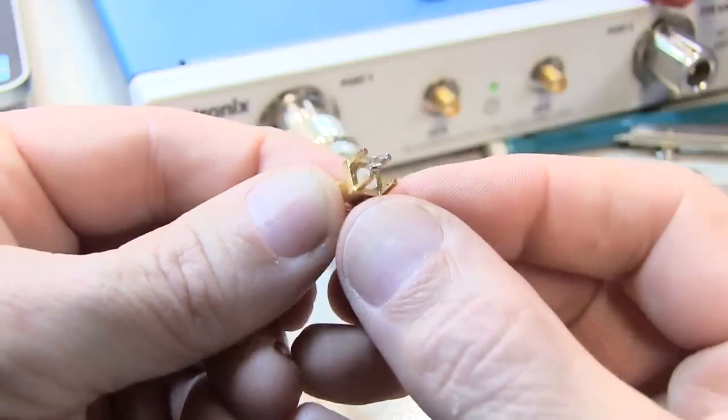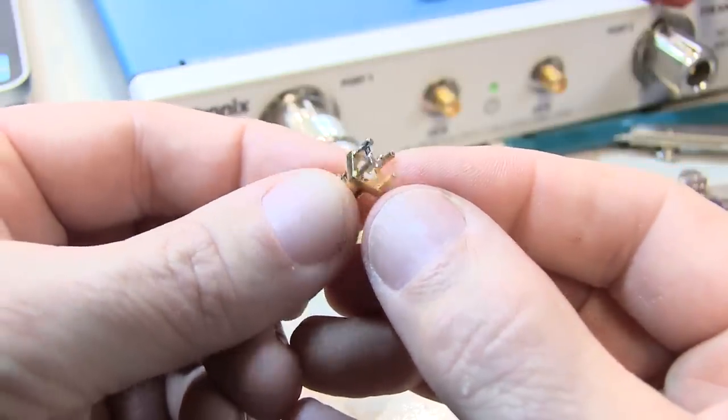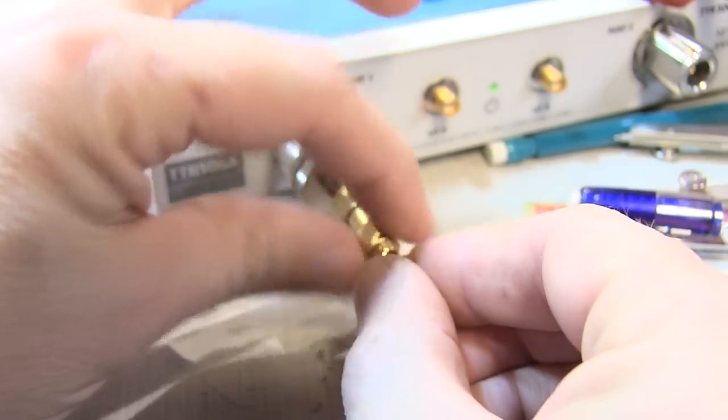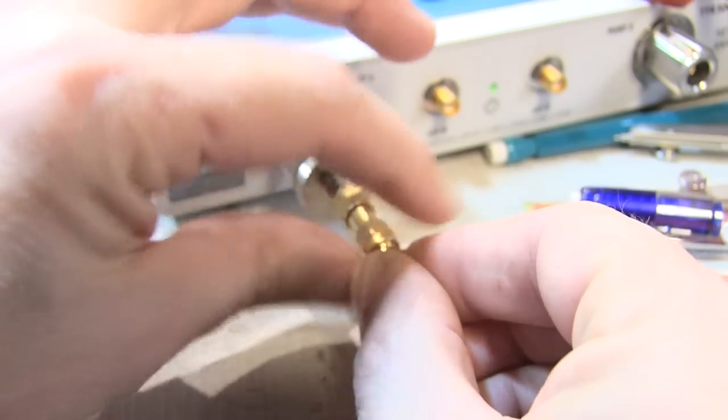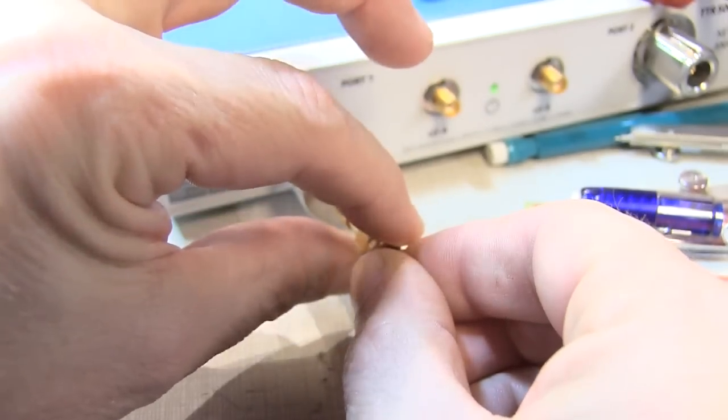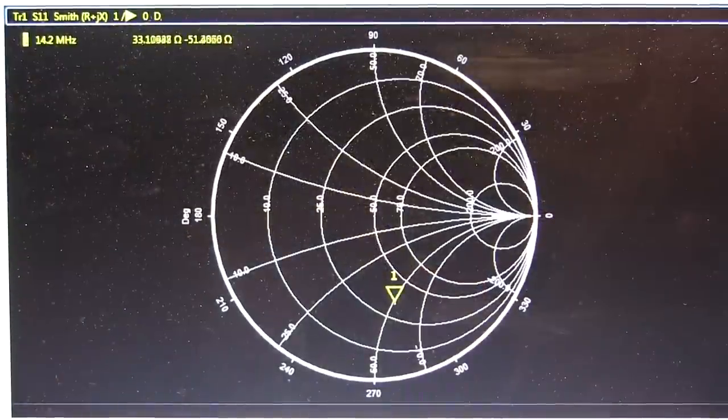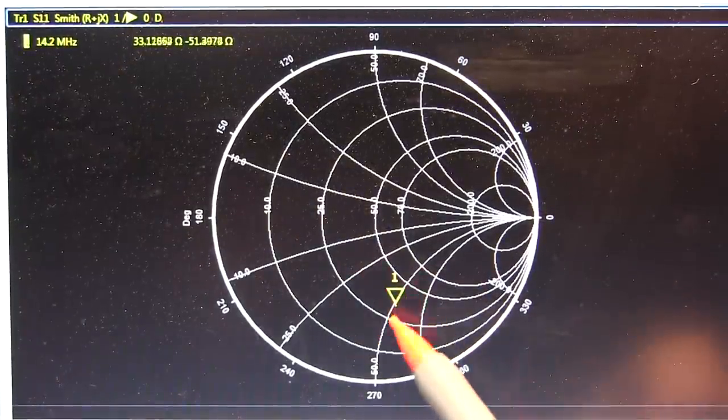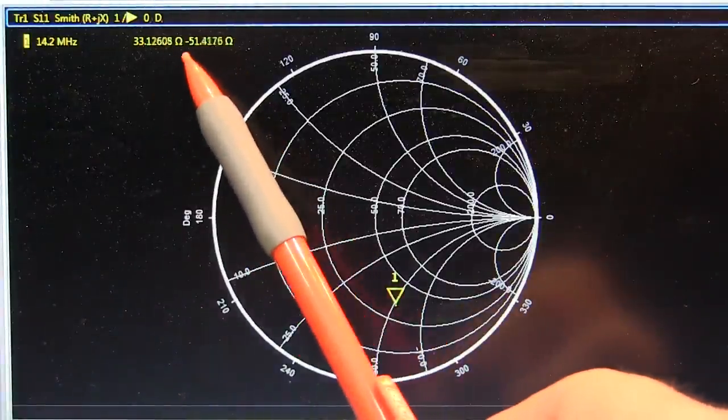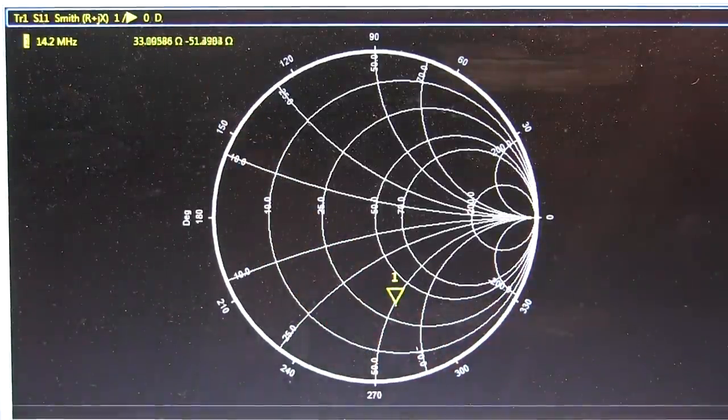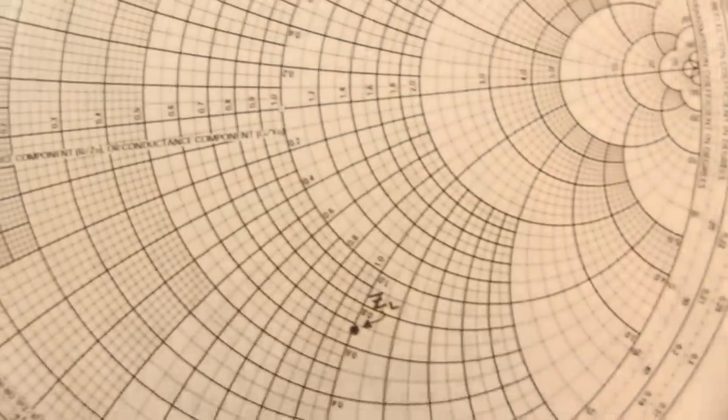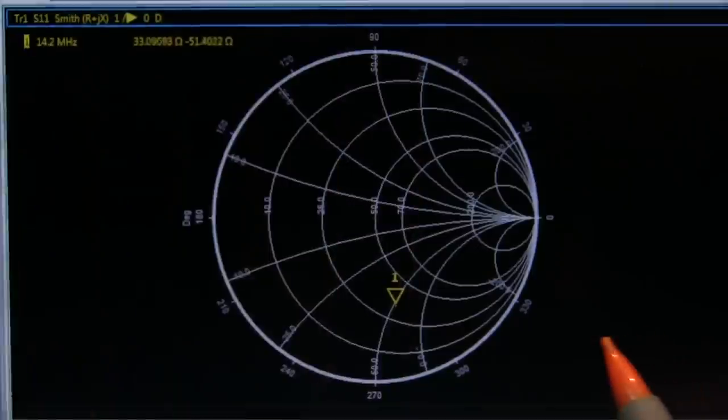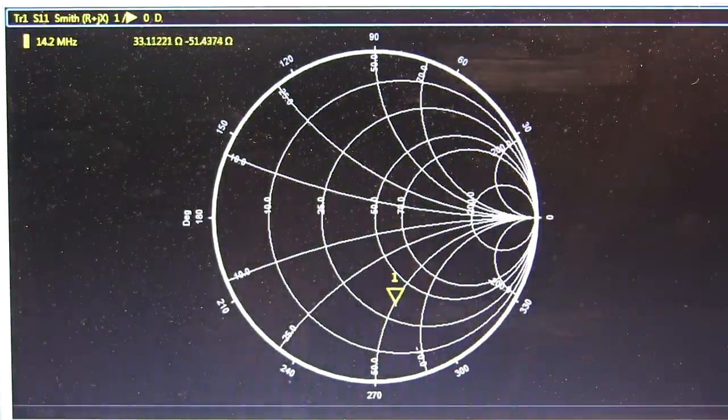To verify our point on the Smith chart, I took a 33 ohm and 220 picofarad capacitor, soldered them in series across this SMA connector, and connected to the VNA. With the VNA set to test at 14.2 megahertz, we can see our point showing 33 ohms and minus 51 ohms of reactance. That matches our computed point with respect to the center of the chart.